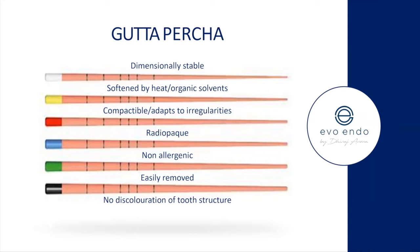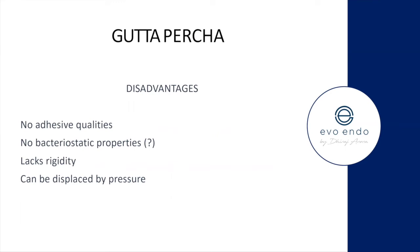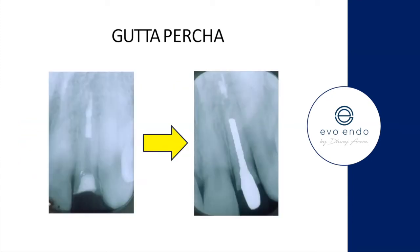Benefits of GP: it's dimensionally stable, can be softened by heat or organic solvents, is compactable and adapts to irregularities, is radiopaque, non-allergenic, easily removed, and causes no discoloration of tooth structure. Disadvantages: it's cytotoxic in cell culture — large particles may get encapsulated but small ones can provoke an intense foreign body reaction, hence why we want to stay at or short of working length. It has no adhesive qualities, lacks rigidity, can be displaced by pressure, and has no bacteriostatic properties.